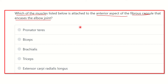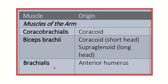First, we need to know which muscles lie on the anterior aspect of the elbow joint, then determine which one attaches to the fibrous capsule. The muscles of the front of the arm are coracobrachialis, biceps brachii, and brachialis. Coracobrachialis starts from the coracoid process and inserts into the humerus, so it does not reach the elbow joint and will not be the answer.